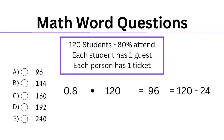The second step is to determine how many people will attend. We know that each student will bring one guest, and there are 96 students. When we double 96, we get 192. As each person attending requires one ticket, it will be the same number of tickets, so our final answer is option D: 192.